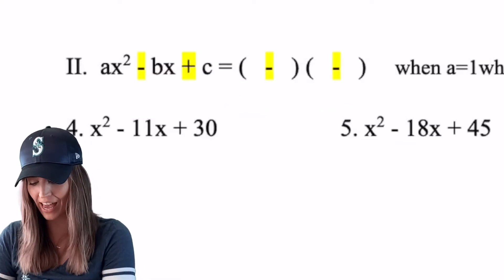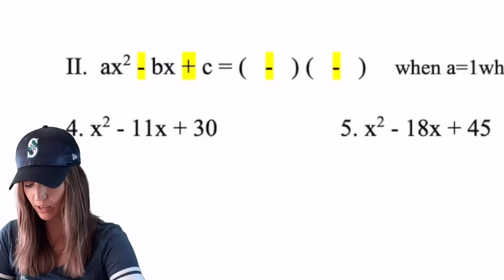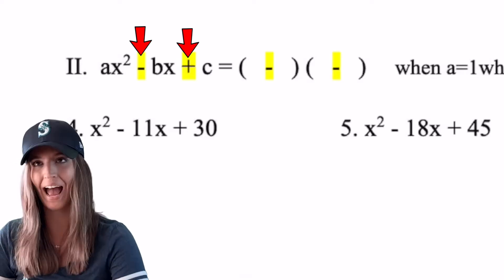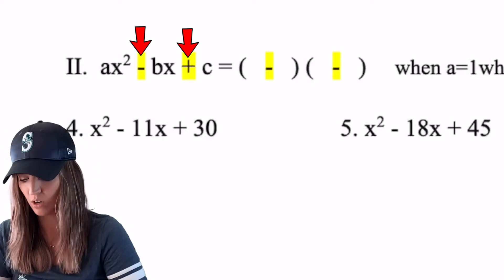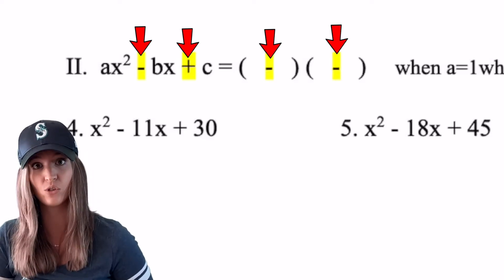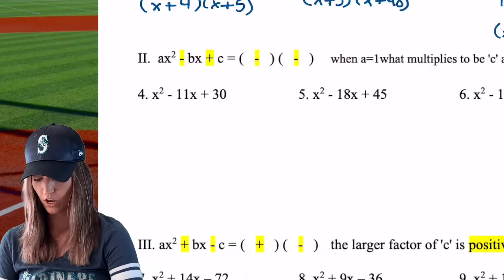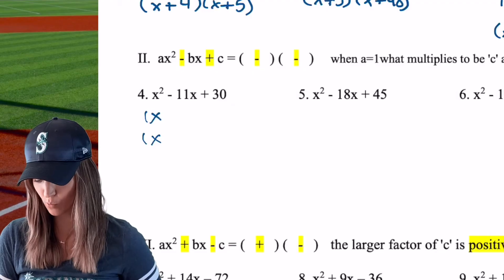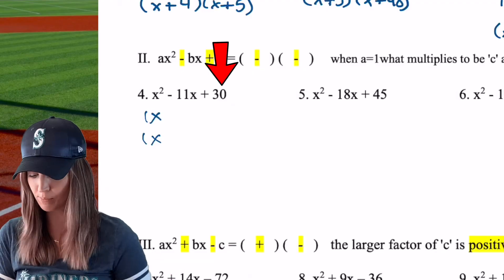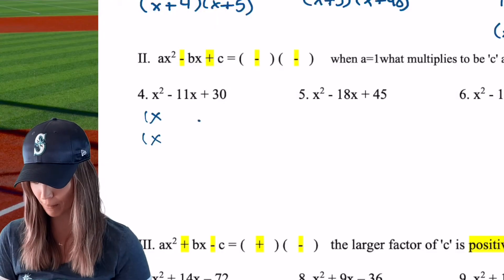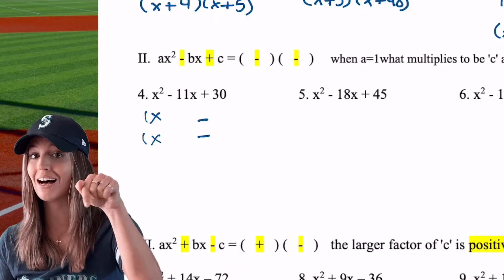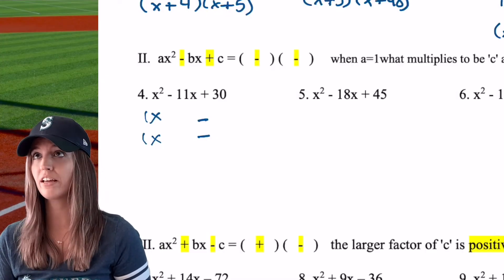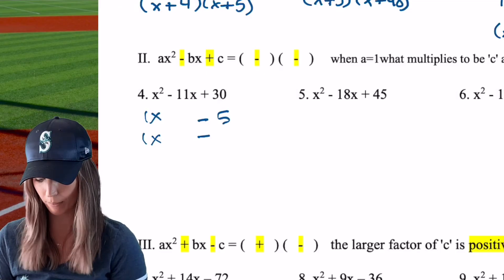Let's keep this up. So in this next scenario, we have ax squared minus bx plus c. So now the bx, that middle term, is negative and that c is still positive. So how are we going to add to a negative and multiply to a positive? Well, we'd have to choose factors that are both negative so that they're multiplying to a positive and still adding to a negative. Okay, so this one we have x squared minus 11x plus 30. So to get x squared, obviously, we're going to choose 1x and 1x. And then to multiply to 30, we have a few choices, but we want to add to negative 11. So I'm going to need to make sure I make a minus and a minus. We could do 5 and 6. Would 5 and 6 add to negative 11 if they were both negative? I think they would.